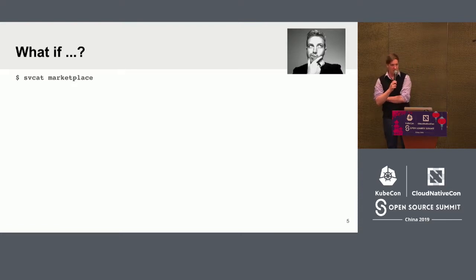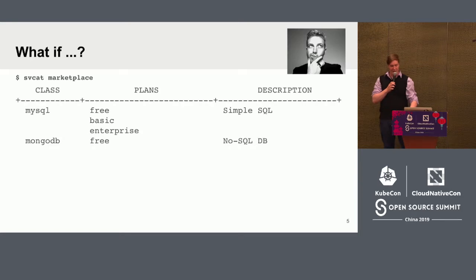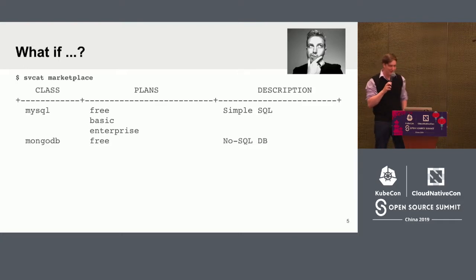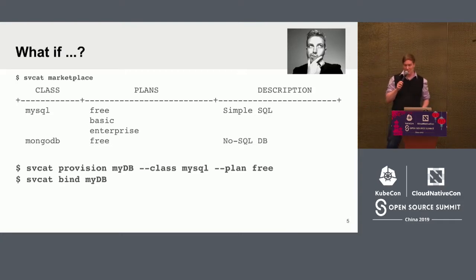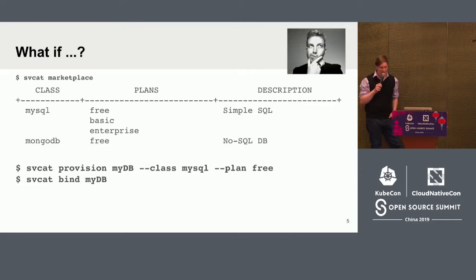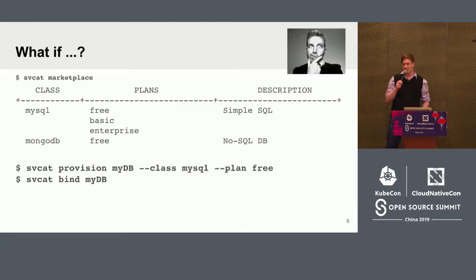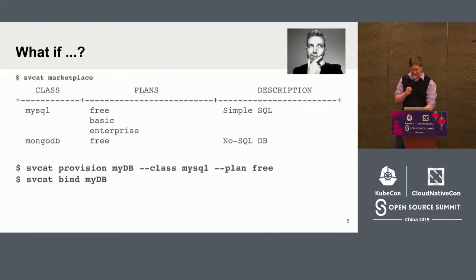What if, as a Kubernetes user, I had a command called marketplace that would show me all the things I could use — and it came back with a list like: we have two flavors of database available, MySQL and MongoDB, and they come in a couple of different flavors. Once I know exactly what I want, I can say provision me an instance of one of those, bind that instance — which creates a set of credentials to access it — and then I could just consume those credentials once they get put in a secret. I wouldn't have to know or care about where that database exists, who's running it, or who controls access to it. That's the promise of what Service Catalog gets you.